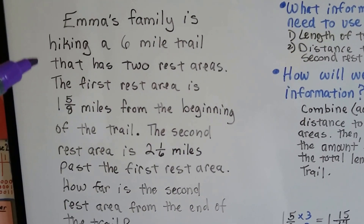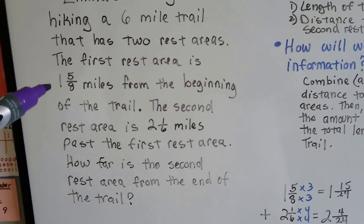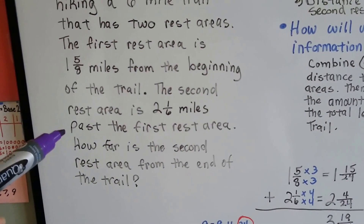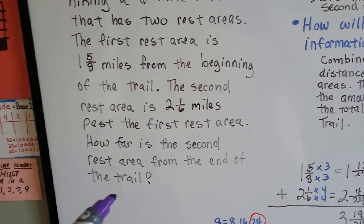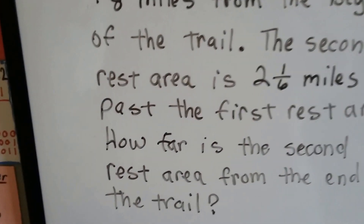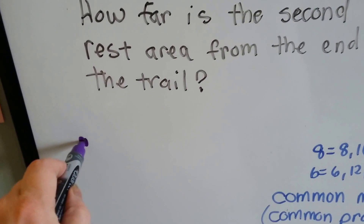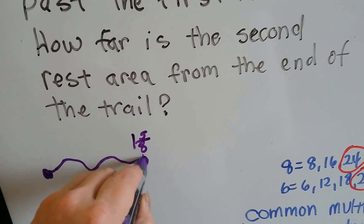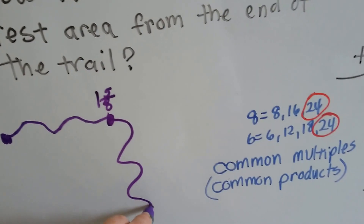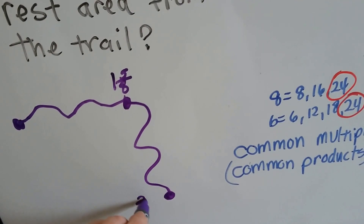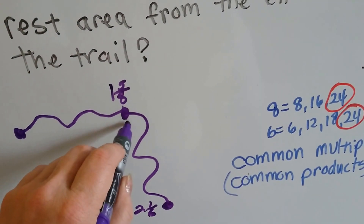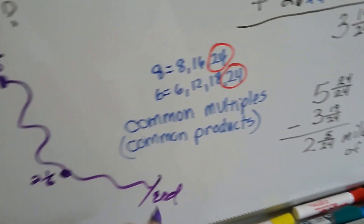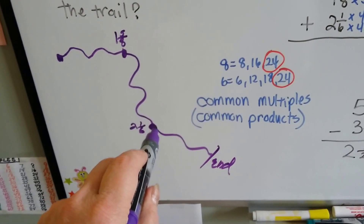Emma's family is hiking a six-mile trail that has two rest areas. The first rest area is one and five-eighths miles from the beginning of the trail, and the second rest area is two and one-sixth miles past the first rest area. How far is the second rest area from the end of the trail? We can draw a little diagram to help us. Here's the beginning of the trail; they walk one and five-eighths miles to the first rest area, then two and one-sixth miles to the second rest area, and then there's the end of the trail.